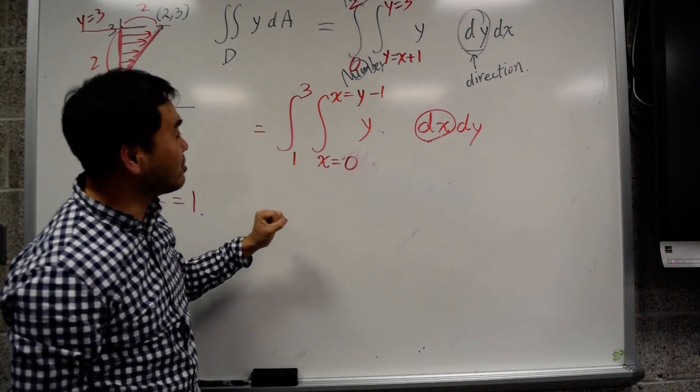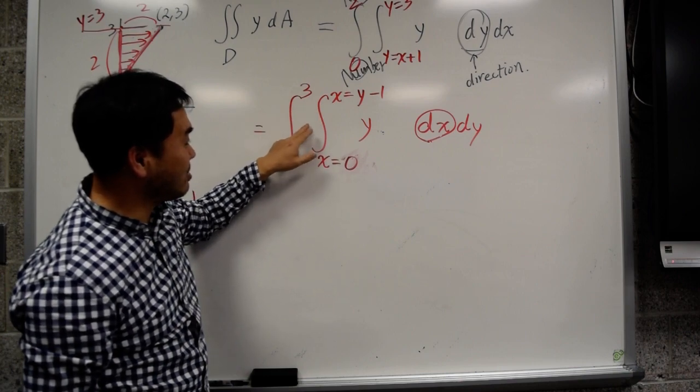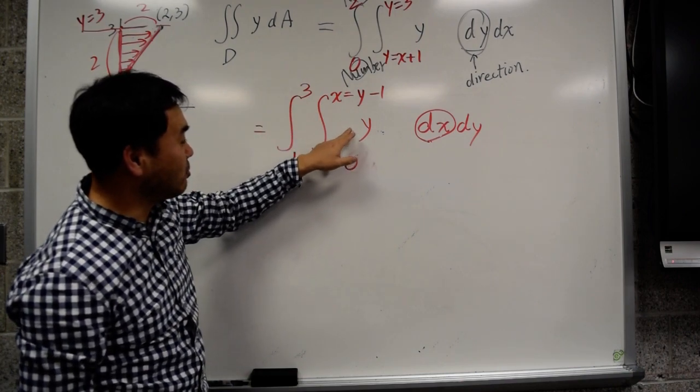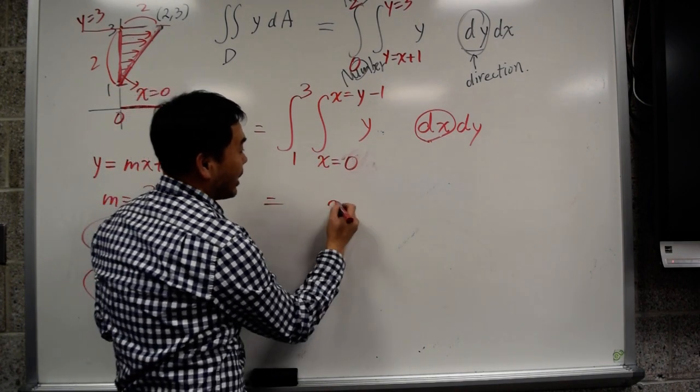Well, it turns out that in a lot of cases, one direction is easier than the other. In this case, this is easier to calculate because if you integrate y, y is a constant, so integrated by x just simply gives you xy.